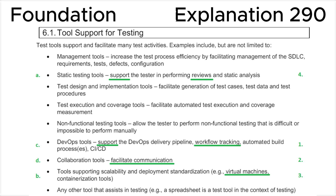From the syllabus: DevOps tools support the DevOps delivery pipeline, workflow tracking, automated build processes, and CI/CD. Collaboration tools facilitate communication. Tools supporting scalability and development standardization include, for example, virtual machines and containerization tools. This is fully consistent with the correct answer C.